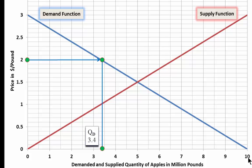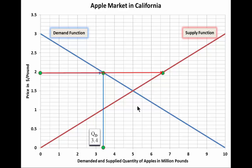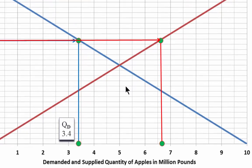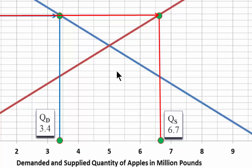Quantity demanded is 3.4 when the price is $2. What is the supplied quantity when the price is $2? We start again at the price axis, but now we ignore the blue curve and we move horizontally to the red curve. After that, we move vertically down. Quantity supplied is 6.7 when the price is $2. Consequently, we are facing excess supply of 3.3 when the price is $2.